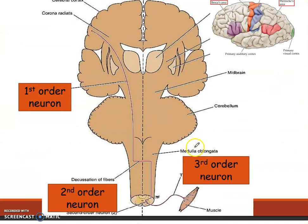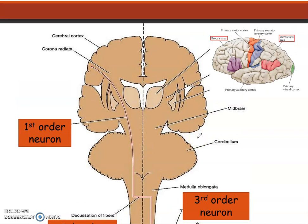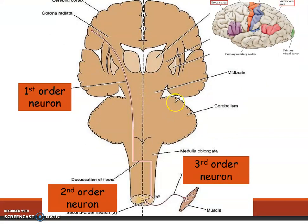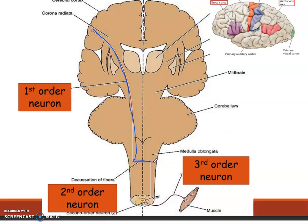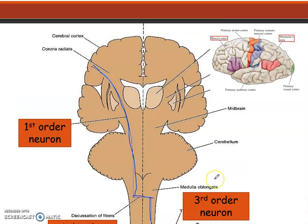There are also three neuronal orders in the descending tracts, as there were in the ascending tracts. There are the first-order neurons; then when there is decussation in the pyramids, they become the second-order neurons; and after them are the third-order neurons, which attach to the muscles.